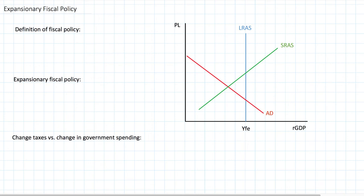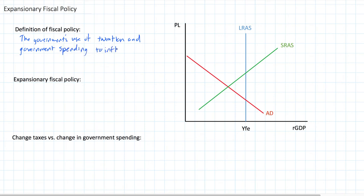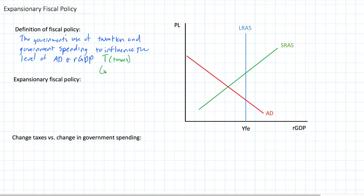Fiscal policy has to do with the government's use of taxation and government spending as a tool for influencing the level of aggregate demand and national output in the country's economy. There are essentially two tools in the toolkit of fiscal policy: taxation — T for taxes — and government spending, which is G for government spending.